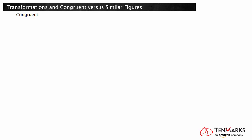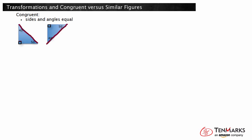Two figures are congruent when their corresponding sides and corresponding angles are equal. These two triangles are congruent. They are the same shape, determined by the fact the angles are all the same. They are also the same size because all the sides have the same length.